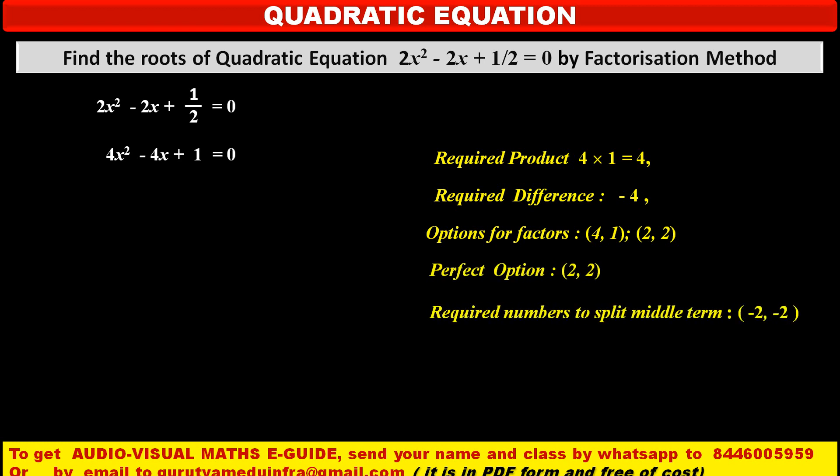Since middle term is negative, that's why we want both the numbers negative: minus 2 and minus 2. So that their sum is minus 4 and their product is +4.